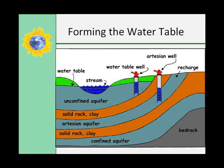The ground above the water table is called the zone of aeration, which has three parts. Just below the surface is the belt of soil water — water stuck to topsoil. The intermediate belt is dry except during rains. The capillary fringe is just above the water table, where water rises from the water table by capillary action, similar to how water spreads through a paper towel.